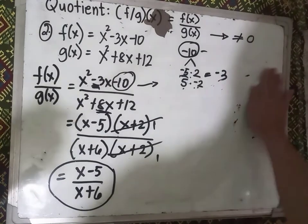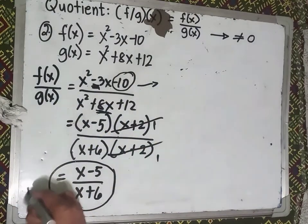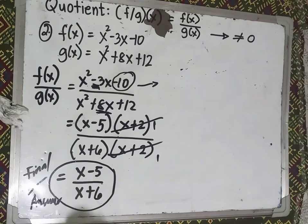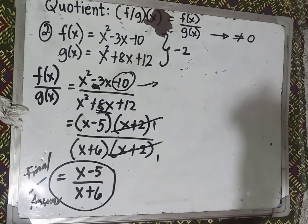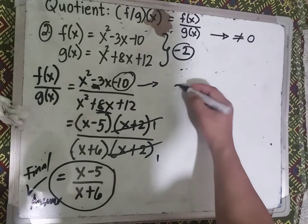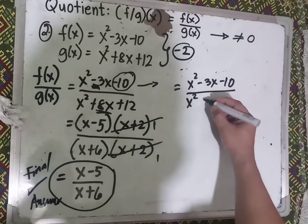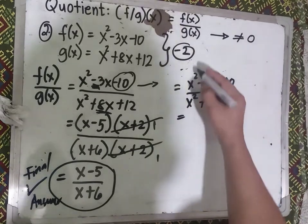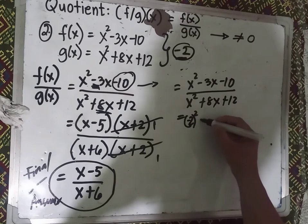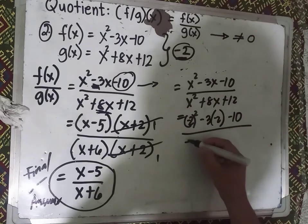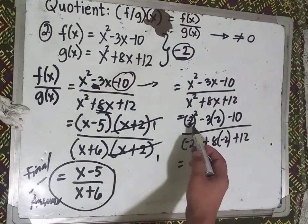The remaining value after cancellation is (x − 5)/(x + 6), and this is your final answer. What if we substitute a value for x? Let's try x = −2. Substituting into the original function: (−2)² − 3(−2) − 10 over (−2)² + 8(−2) + 12.